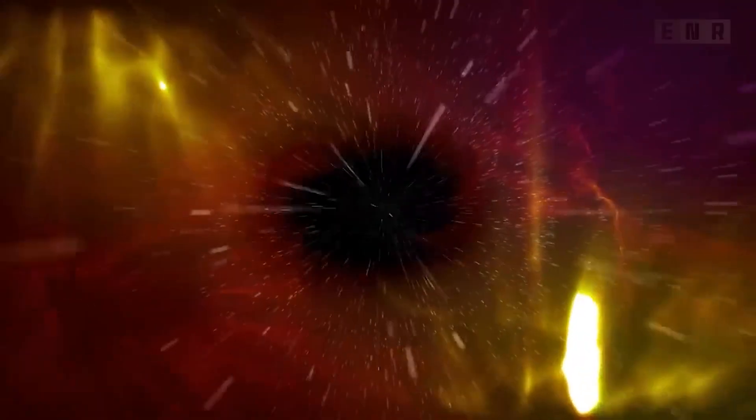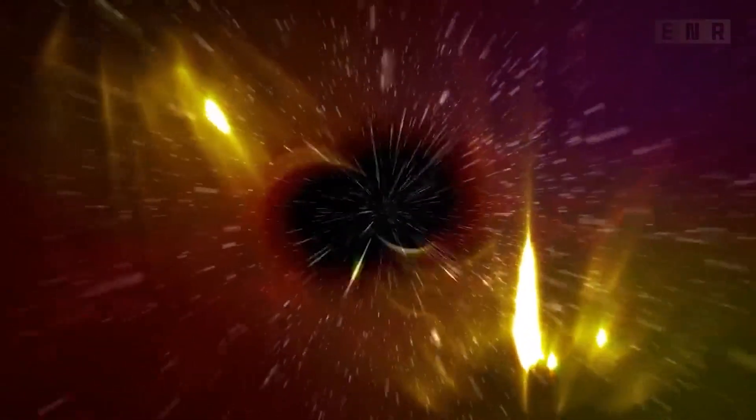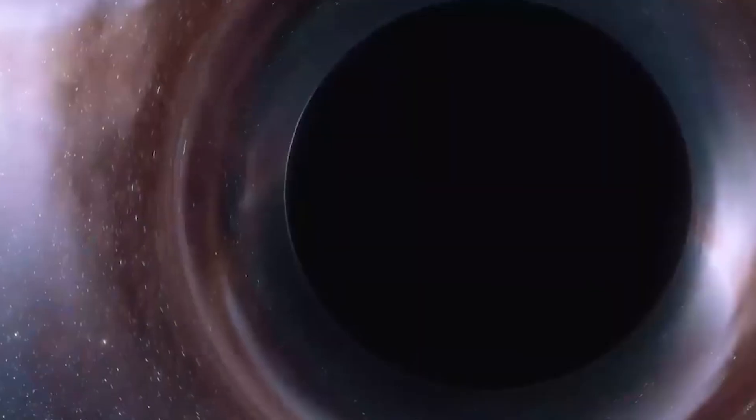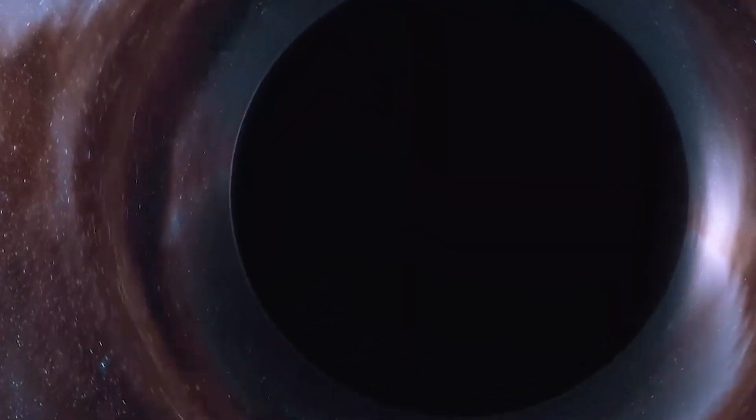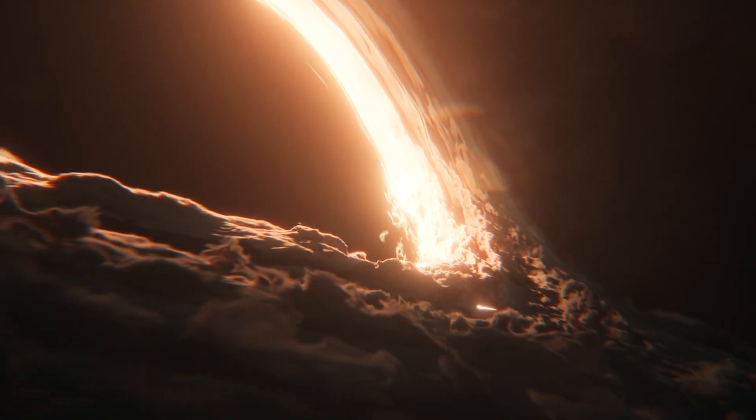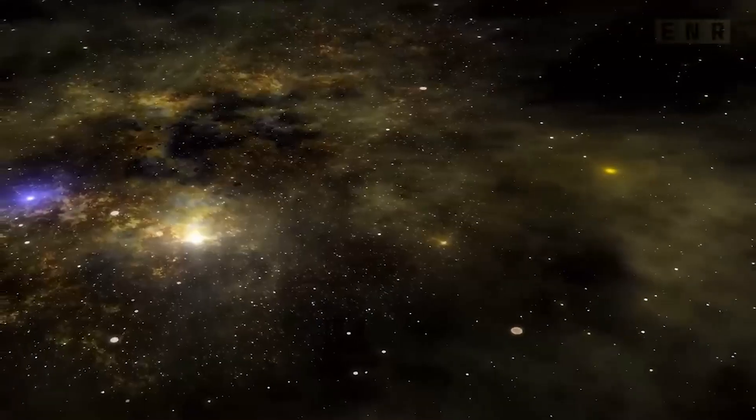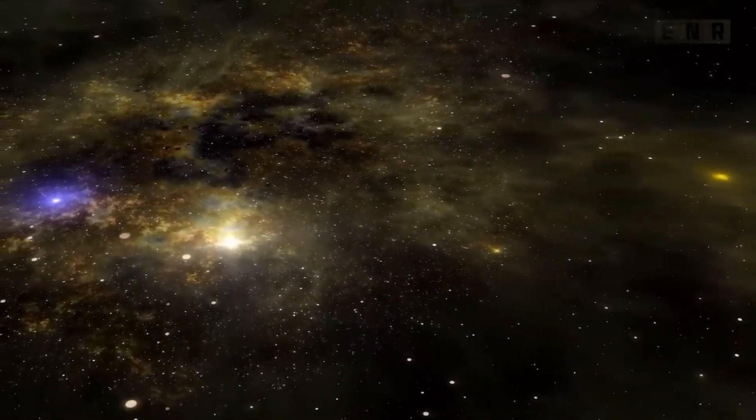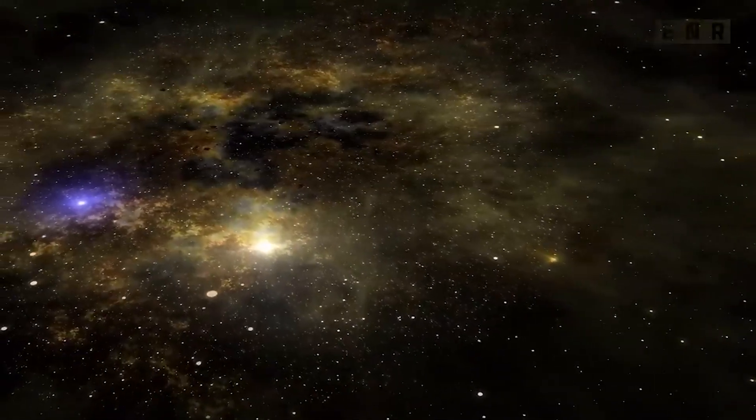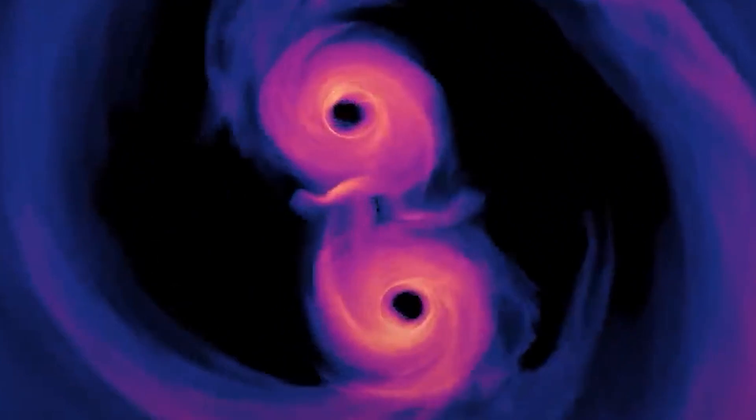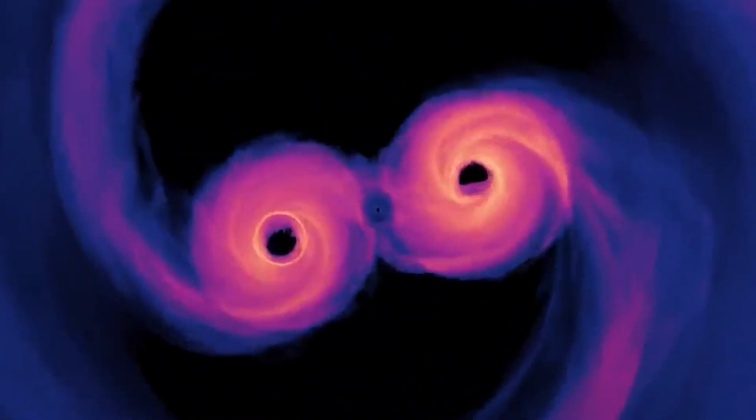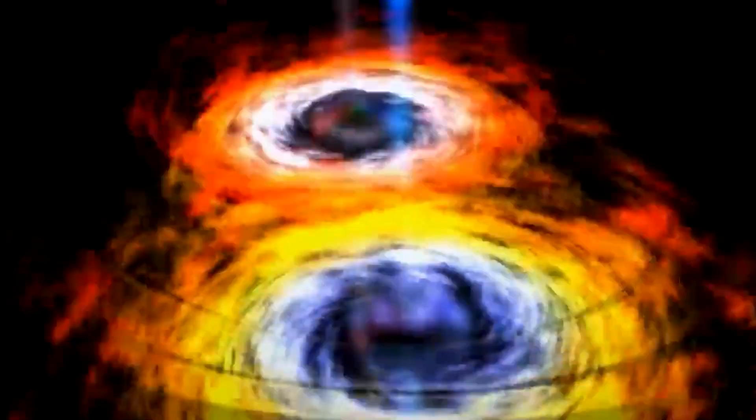Penrose and some other scientists noticed some unusual points in this radiation that challenged what we know about the universe. They proposed that these points could be traces of energy from huge black holes in a universe that existed before ours. These black holes were incredibly powerful and could produce energy levels similar to the Big Bang.